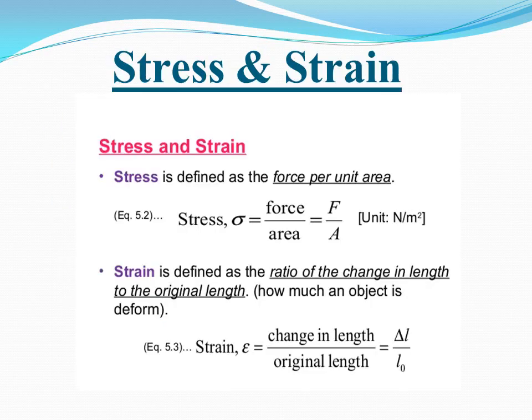Now we discuss two terms: stress and strain. Stress is force per unit area, and its formula is F/A. The unit of force is newton and the unit of area is meter squared, so the unit of stress is newton per meter squared. When you apply force to an elastic object, its dimensions change. If force causes a change in length, the ratio of change in length to original length is known as tensile strain.